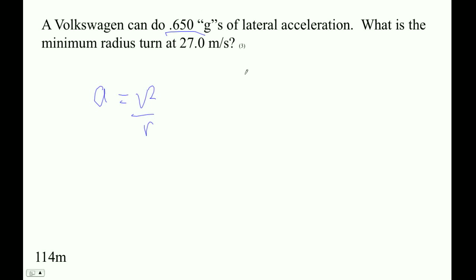0.65 g's means our acceleration is 0.65 times 9.81, so that is 6.3765 meters per second squared. So that's our acceleration.